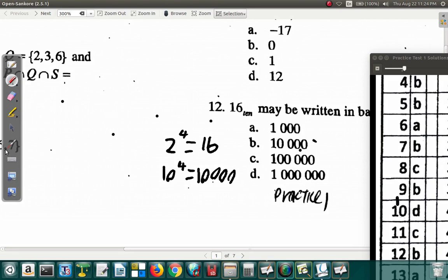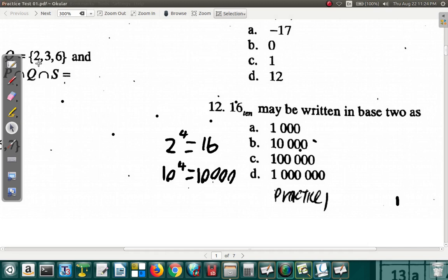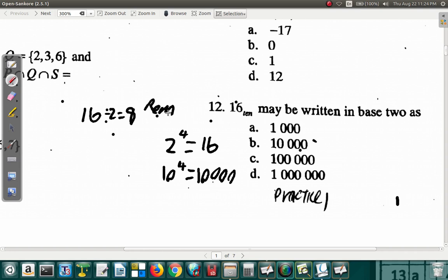If you want to convert a base 10 number to a base 2 number, you write down the number. This is base 10, and you divide by 2. 16 divided by 2 equals 8, remainder 0. And the remainder would be the numbers that you quote after.